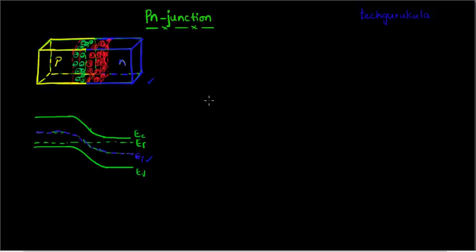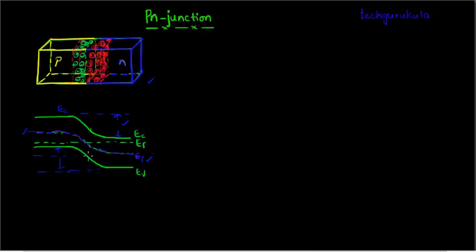Before going into that, let us look at some calculations based on the difference between the conduction band on the P side and the conduction band on the N side. This difference is equal to the distance between EI at the P side and EI at the N side, which equals distance one plus distance two — distance one being in the P type region and distance two in the N type region, measured far away from the junction.